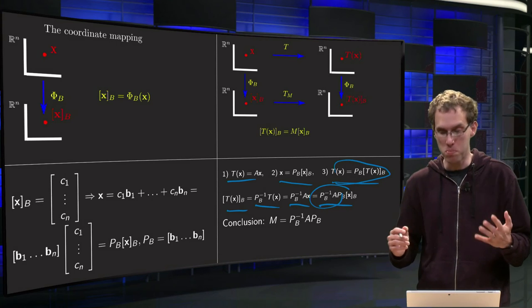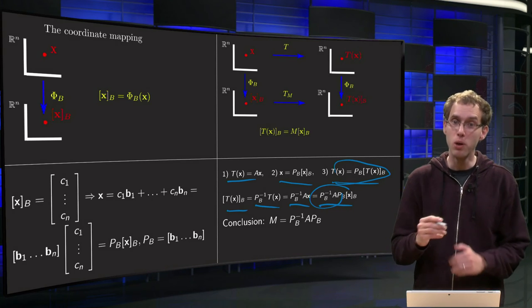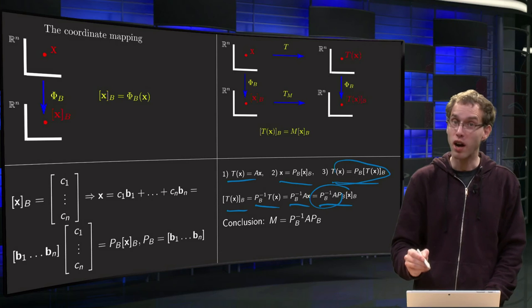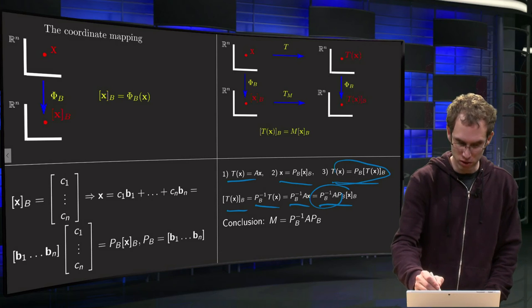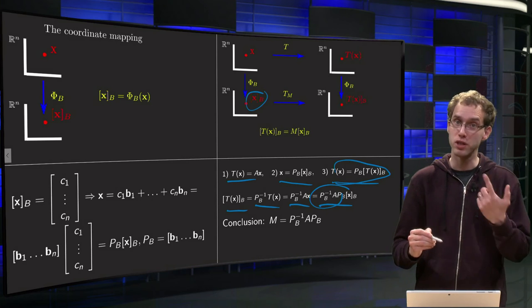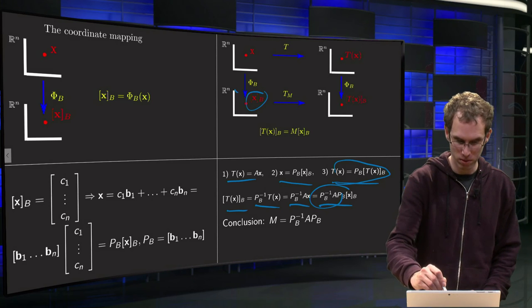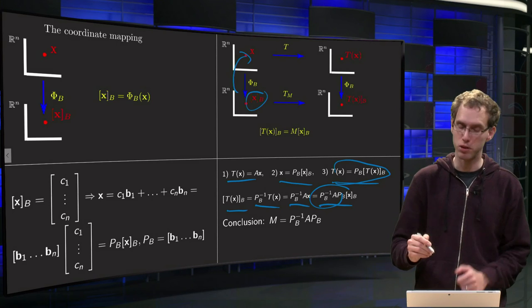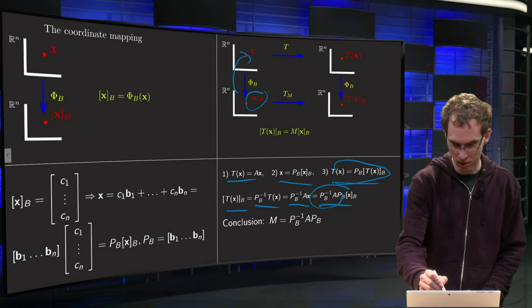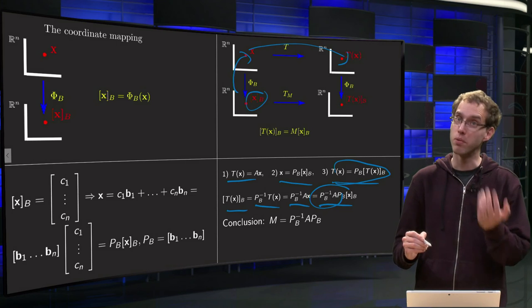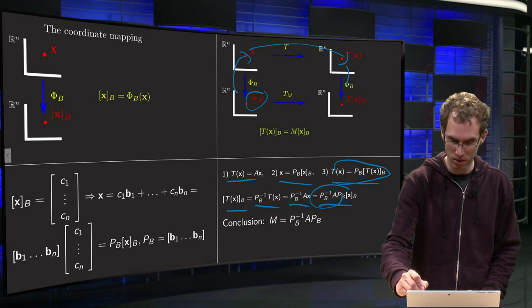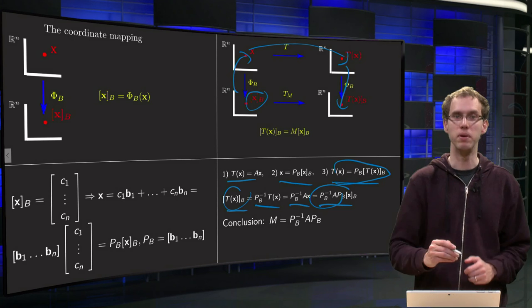And how can you memorize such a formula? Well just look at the picture. Say you start with your xb, so you start here. First you have to multiply with Pb, you get over there. Then you multiply with A, you get over there. And then you multiply with Pb inverse, so you go down. And then you are over here, and you are at T of x in b.